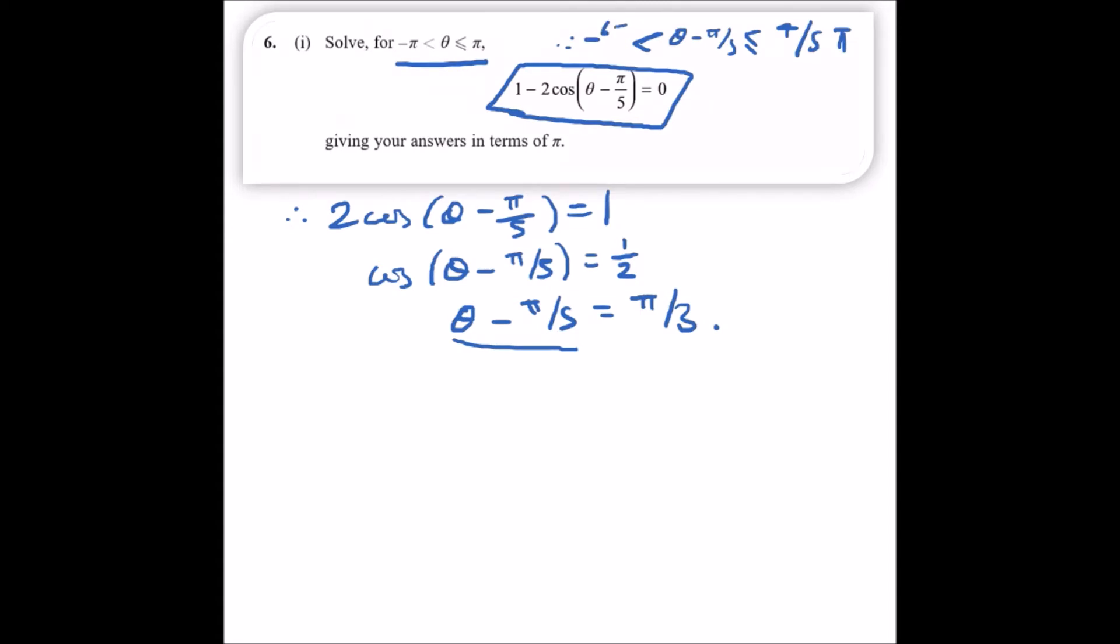To do this, we always start with the CAST diagram. If you recall using a CAST diagram, we only deal with quadrants that are related to the function we're using.